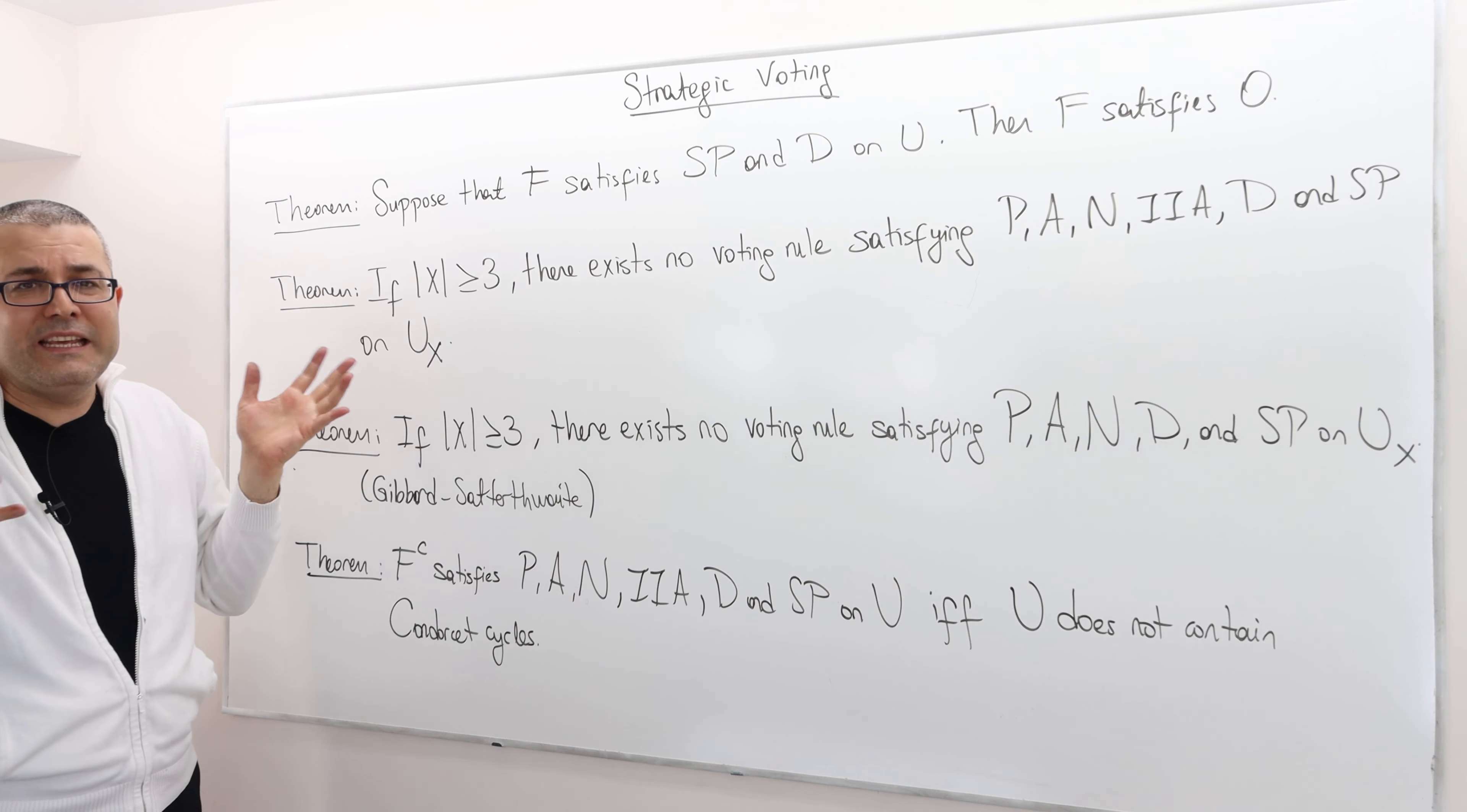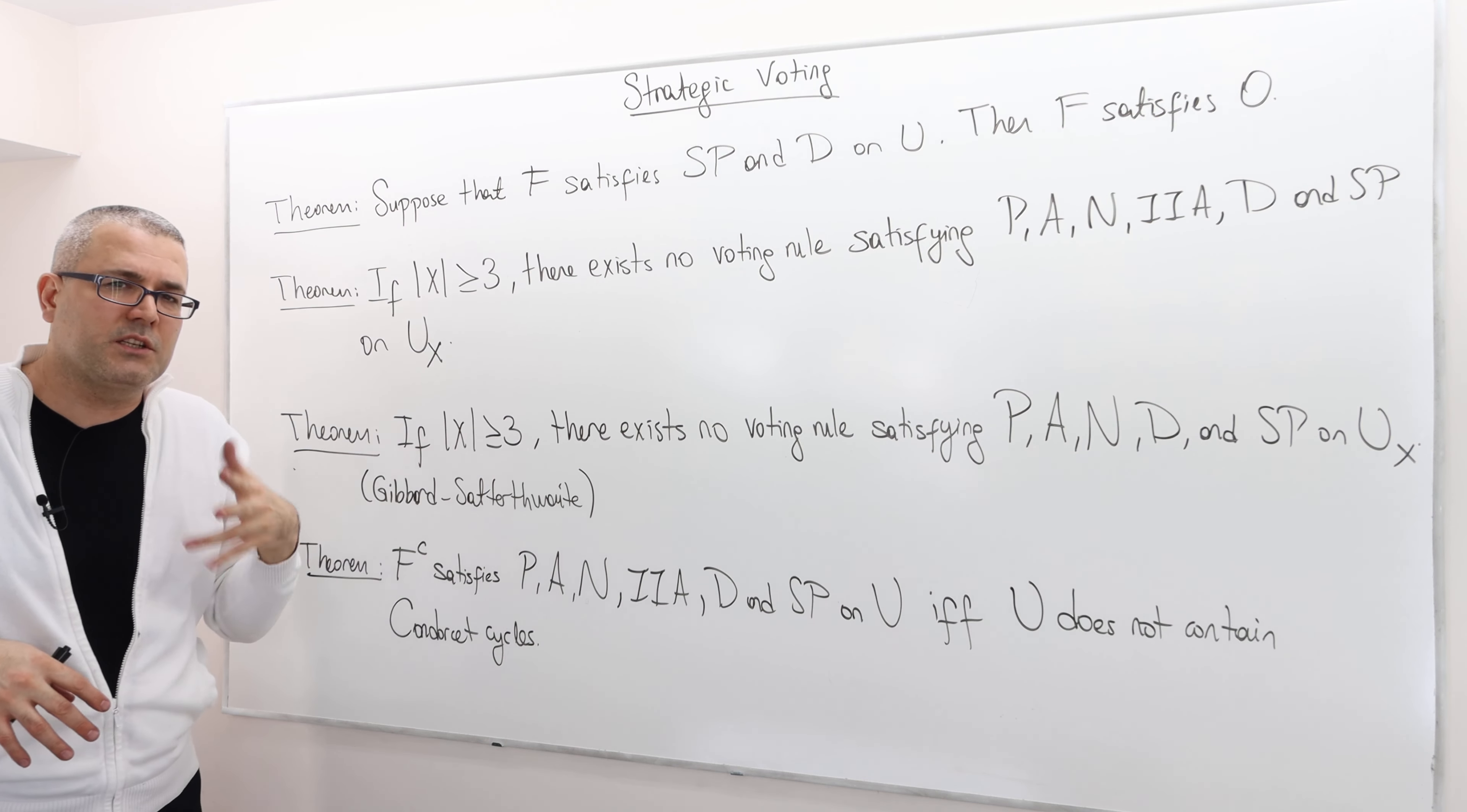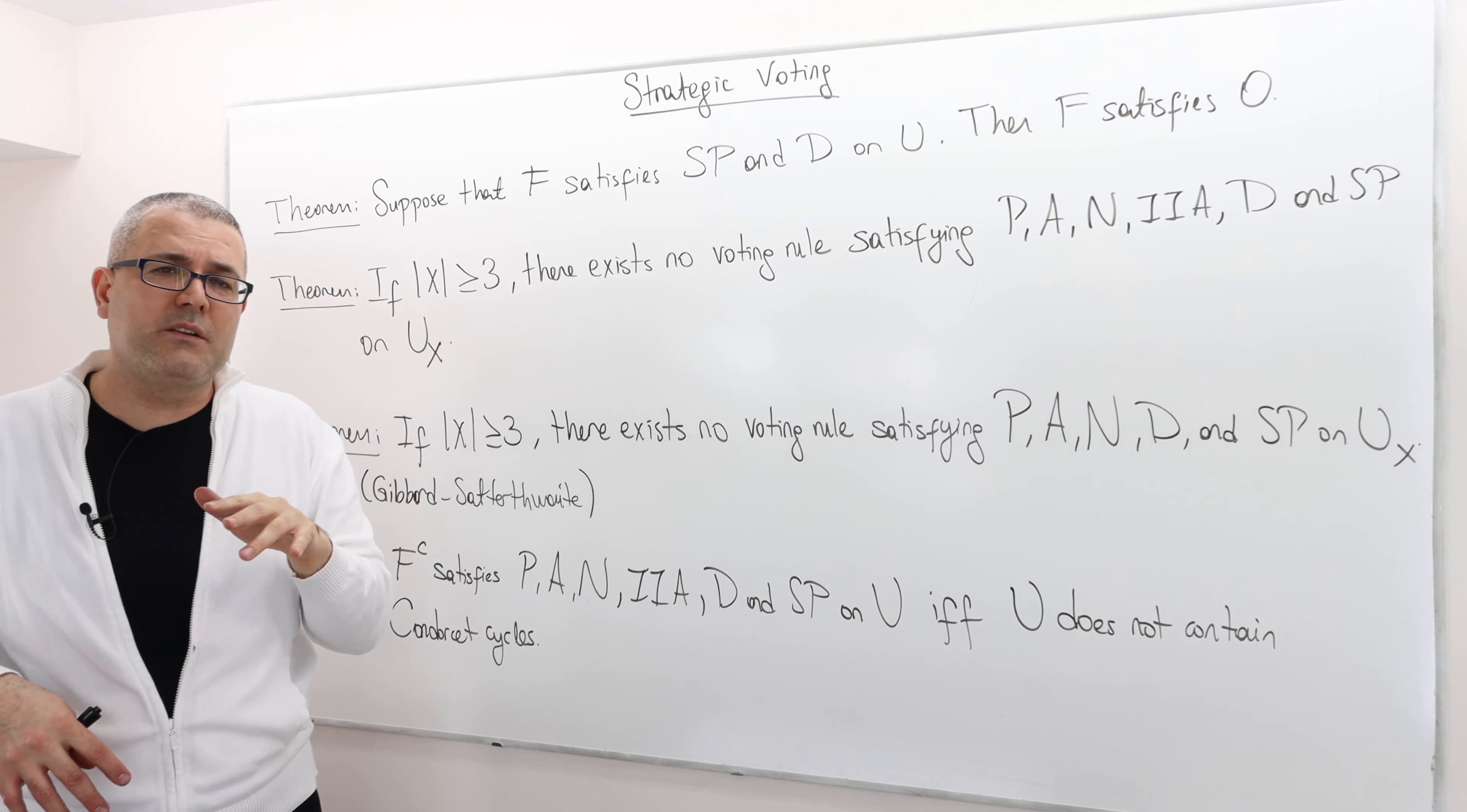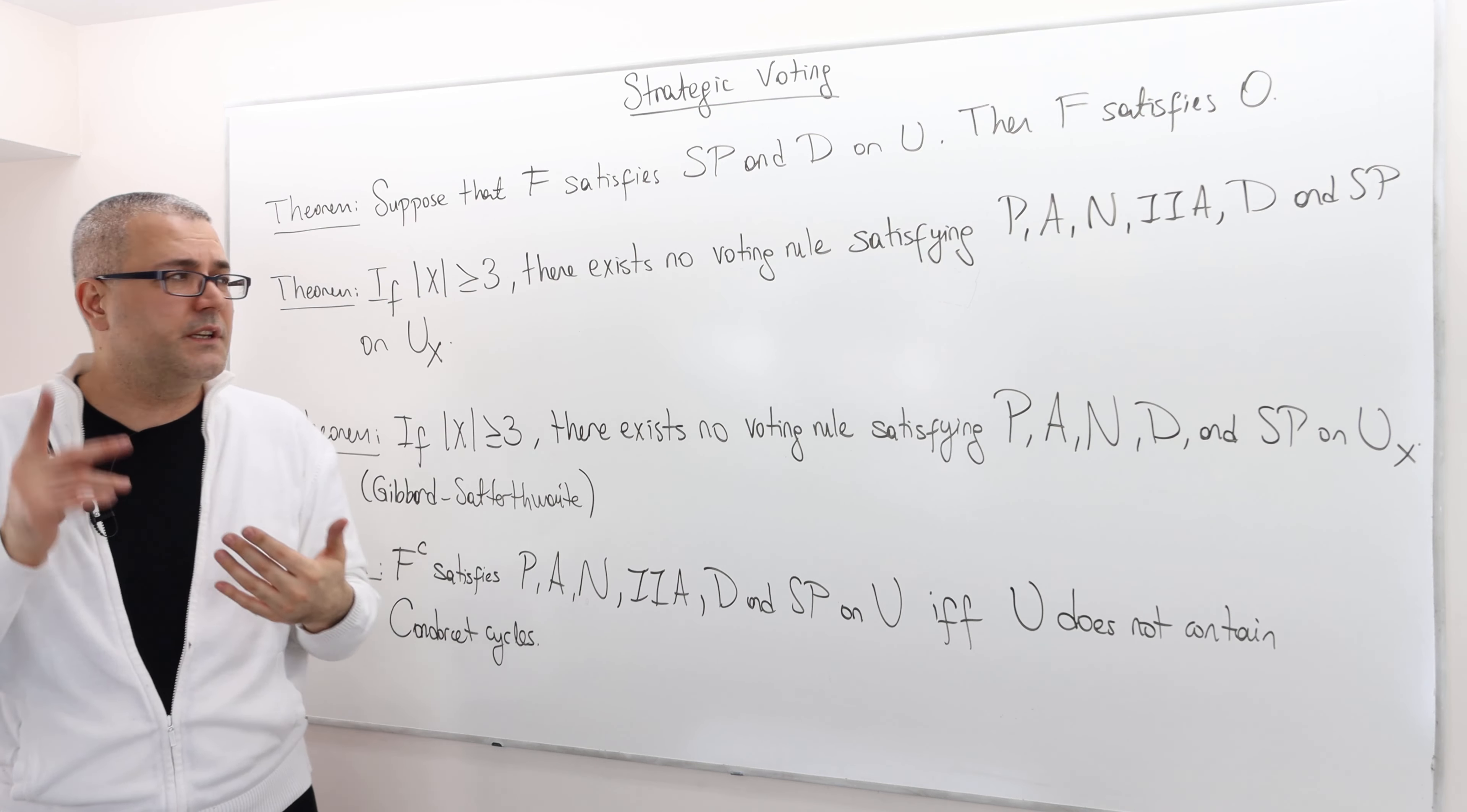Well look if I have at least three or more alternatives. By the way, I don't know if you noticed but all these impossibility results are true if we have three or more alternatives. If we have only two alternatives, well then the Arrow's impossibility result is not going to hold. There is actually some voting rules which have nice properties.